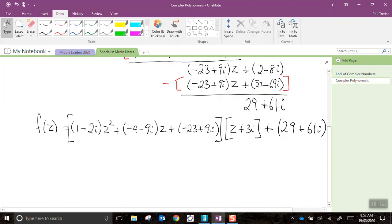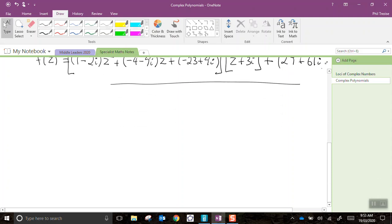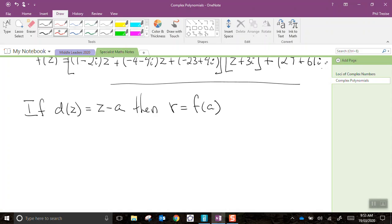Now, that's the end of that question. There's a thing called the remainder theorem that we could use to check. The remainder theorem says, if our divisor is of the form z take a, then the remainder is the original function evaluated with the value a. That's the remainder theorem, and we can use that to check our work, to see that we've got this right. It's pretty straightforward.